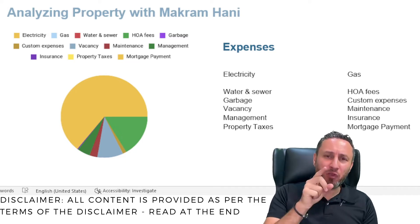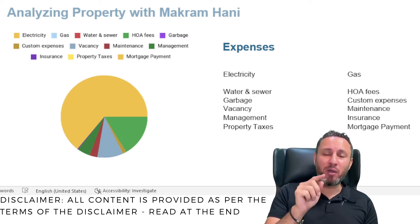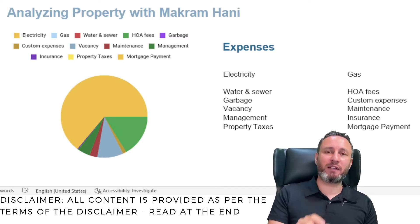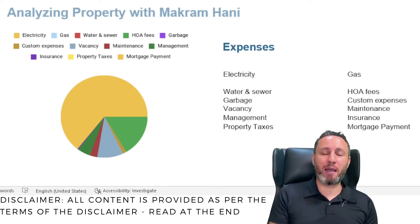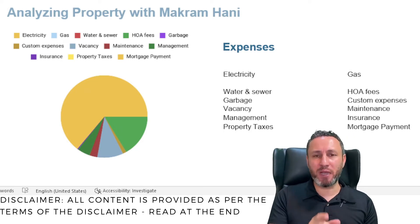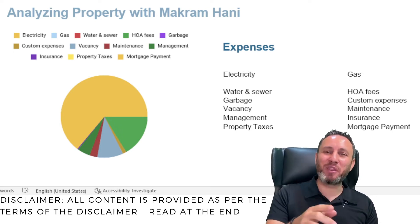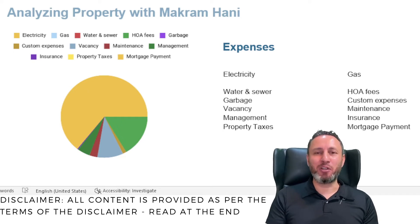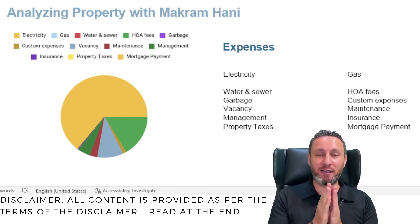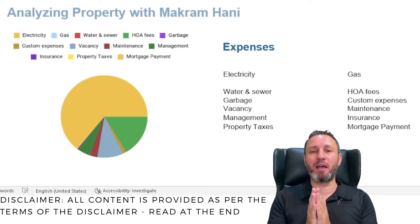Insurance: if you have a property and you have a leak, and that leak affected your flooring, your cabinets, and your neighbor's furniture — would you like to pay for all that, or would you prefer that an insurance company takes care of all that? Go ahead with insuring your property. Don't leave your property without insurance because you'll be exposed — that asset may become a liability.